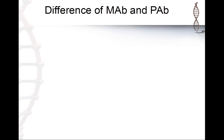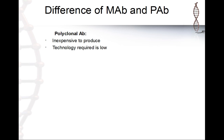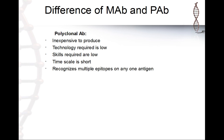Polyclonal antibodies are inexpensive to produce: you immunize an animal and it produces for you a mixture of antibodies which you can purify and use. The technology is really not that sophisticated and the skills are not hard to learn. The time scale is short — maybe about 30 days in a rabbit — and recognition of different epitopes is inherent by definition.